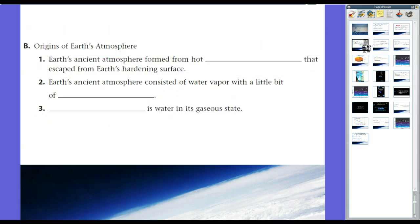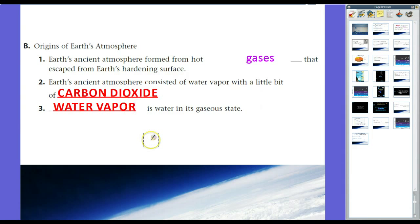So, how did Earth's atmosphere form? Well, Earth's ancient atmosphere forms from hot gases that escape from Earth's hardening surface, mainly carbon dioxide and things like that. Earth's ancient atmosphere also created and had a lot of water vapor, with a little bit of carbon dioxide. And, of course, water vapor is simply water in its gaseous state. Normally, when water is boiling at 100 degrees Celsius or 212 Fahrenheit, water will be in gaseous form. But also, the temperature is lower because a liquid has a higher state of motion in the molecules. You'll have individual molecules floating around in gaseous form.